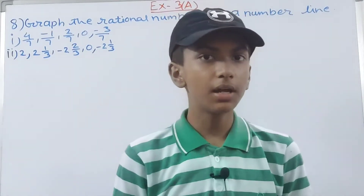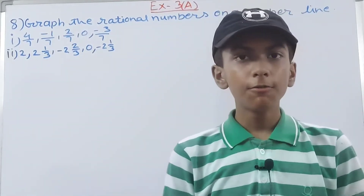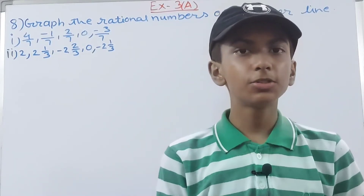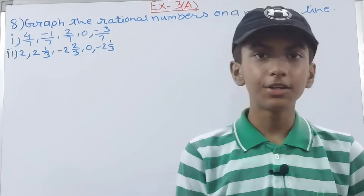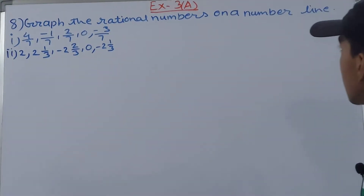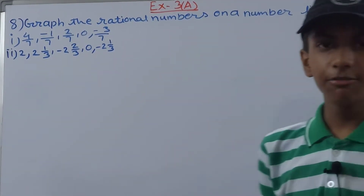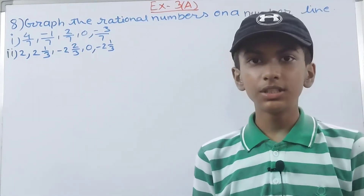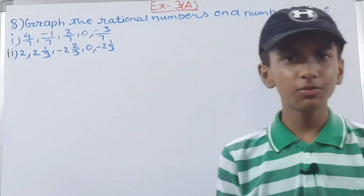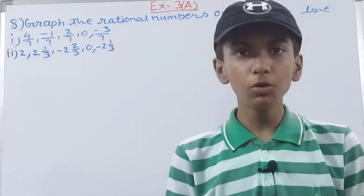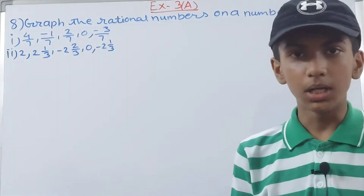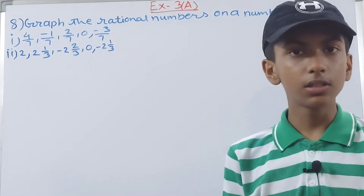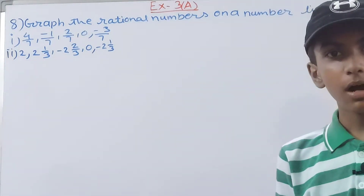Hello friends, welcome back to my YouTube channel Lock Your Learning. In this video we are going to solve ICSE Mathematics Class 7 Chapter 3 Rational Numbers, Exercise 3A Question Number 8: graph the rational numbers on a number line. Just like we graph fractions on the number line, we do the same here for rational numbers. We make a number line with its center as 0.